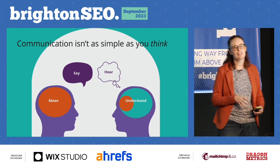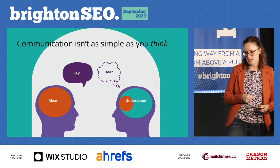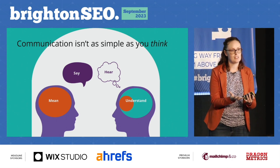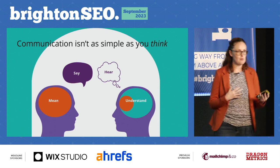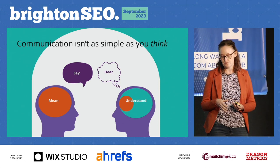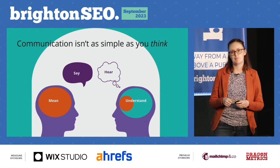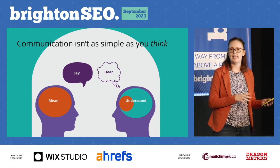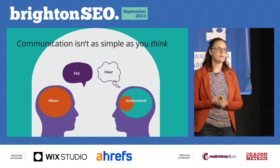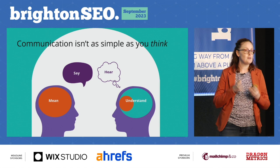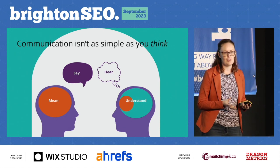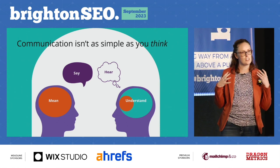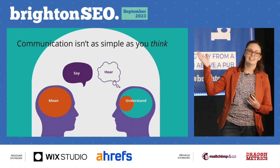We start by understanding that communication isn't as simple as you think. When I mean something, I have a whole meaning in my head. I then say something to you, you hear what I'm saying, and you make your own interpretation of it. This is where distrust comes into play, because the meaning you have is never the same as the meaning I have — you're layering on your own preconceptions. This is what's happening when you have a distrustful relationship with someone, say an SEO team versus a development team: 'They're just not listening to me, they just aren't doing what I'm trying to tell them.' This is the reason why.